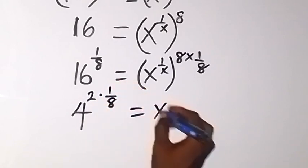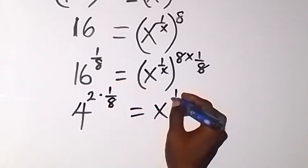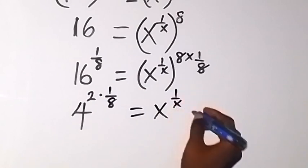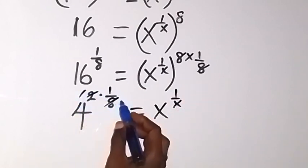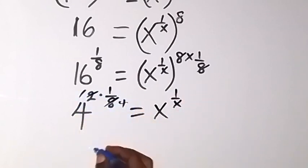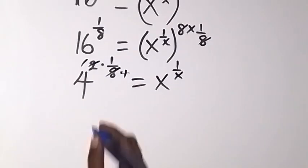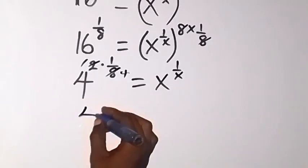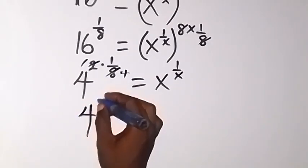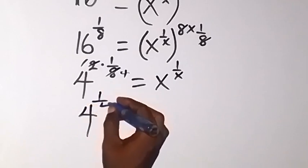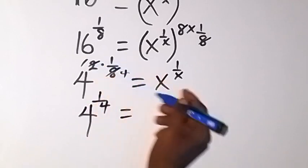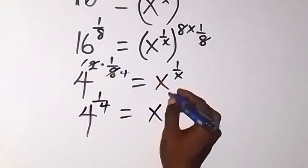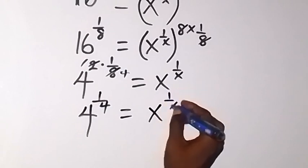So this equals x raised to power 1 over x. Then 2 times 1 over 8 gives 1 over 4. So we can say this is now 4 raised to power 1 over 4, equals x raised to power 1 over x.